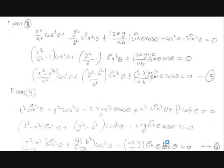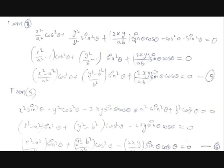Now we simplify equation 3. Expanding (x/A·cosθ + y/B·sinθ)² using the (A+B)² formula gives: x²/A²·cos²θ + y²/B²·sin²θ + 2·(xy/AB)·sinθ·cosθ. Moving cos²θ and sin²θ to the left-hand side gives a combined expression equal to zero.